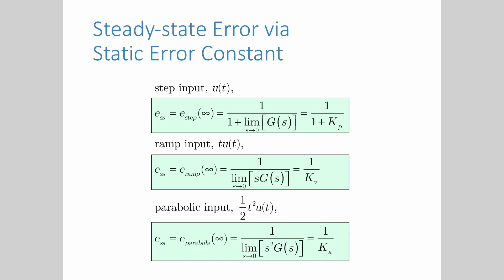As we have seen, these quantities depending upon the form of G(s) can assume values of zero, finite constant, or infinity. And since the static error constant appears in the denominator of the steady state errors, the value of the steady state errors decreases as the static error constants increases.